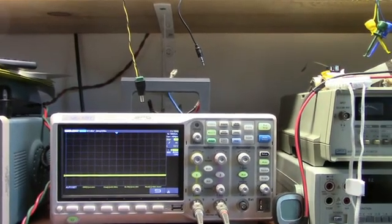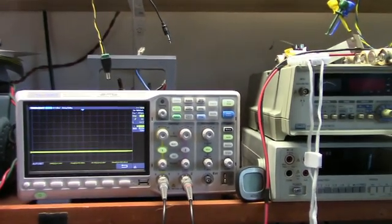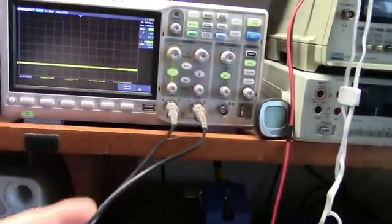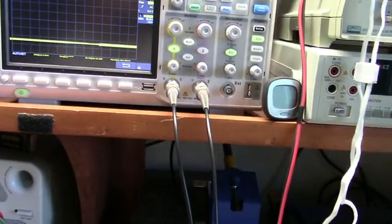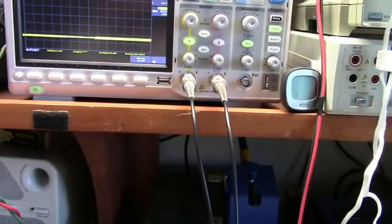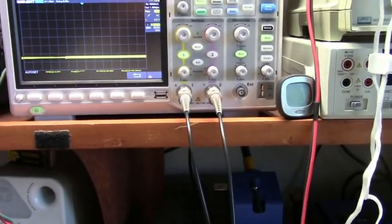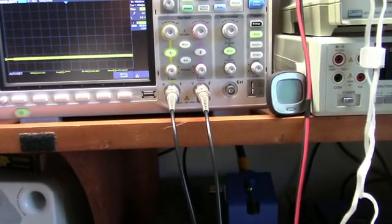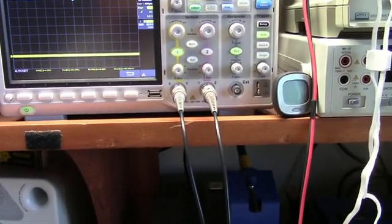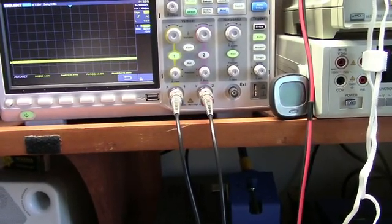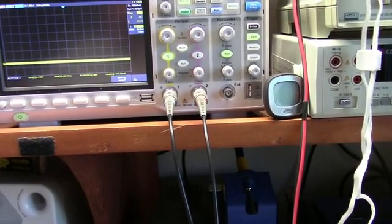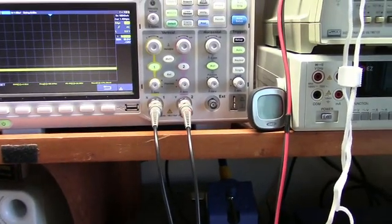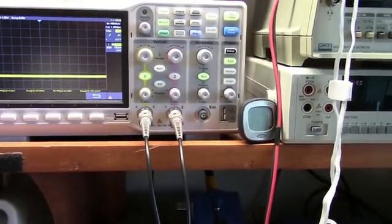Another thing that works is if you use two probes. Of course you need a two-channel scope to do it, and you go into the add mode. Then this will add channel one and two, and then if you invert channel two and set both channels to equal deflection factors, you'll measure the difference, or basically subtract both channels. Then you can measure two points without the ground reference.